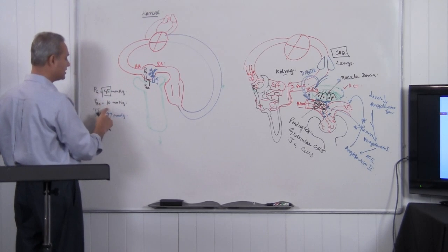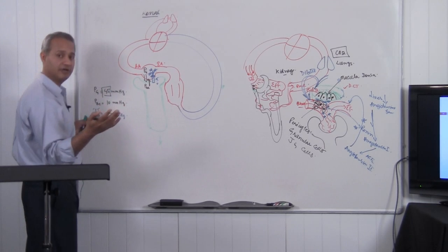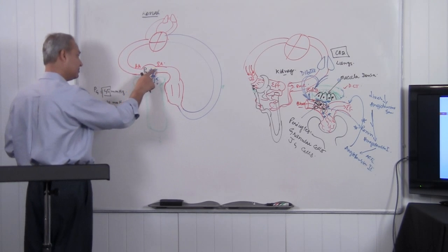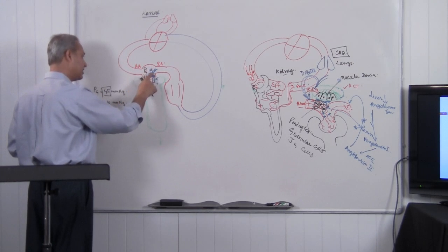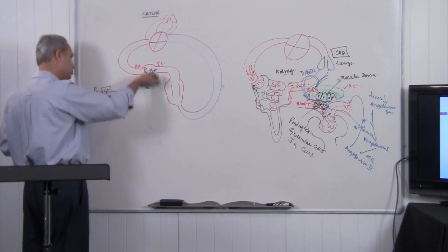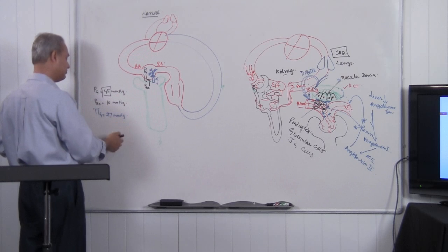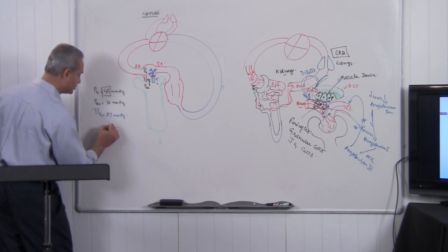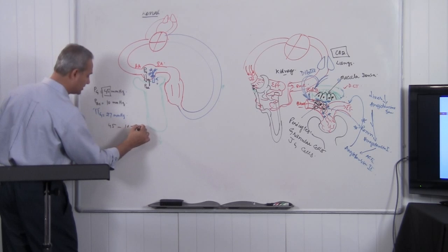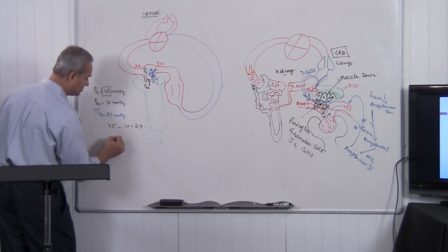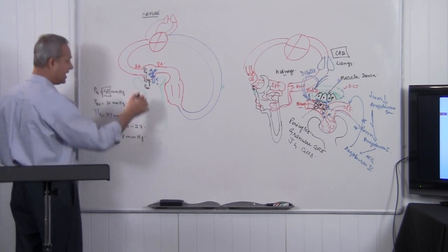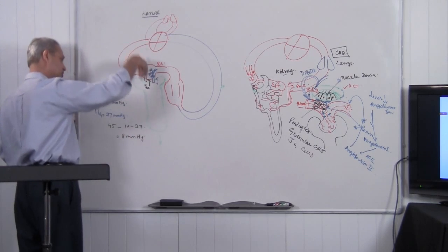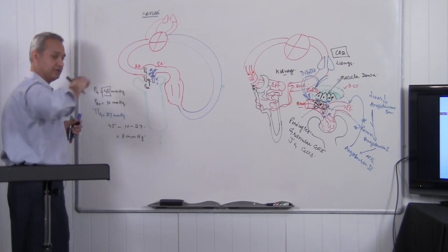So 45 mmHg is the force pushing fluid out from the glomerulus into the Bowman's capsule. Two forces oppose it: the hydrostatic pressure of the accumulating fluid at 10 mmHg, and the proteins pulling fluids back at 27 mmHg. So 45 minus 10 minus 27 equals about 8 mmHg net pressure moving the fluid out.